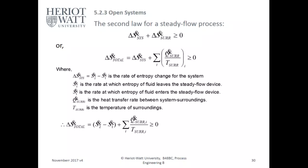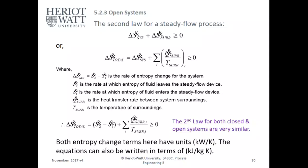Delta S total equals S2 minus S1 plus the sum of Q of the surroundings over T of the surroundings, and that is always greater than or equal to zero — the second law. This form applies to both closed and open systems; entropy change terms have units of kilowatts per kelvin, or can be written per kilogram (kJ/kg·K) for specific quantities.